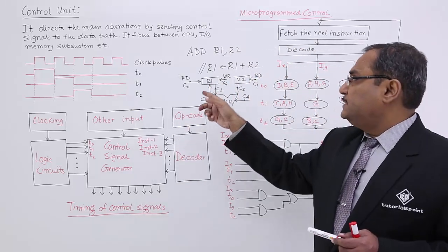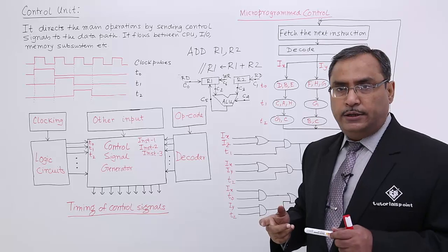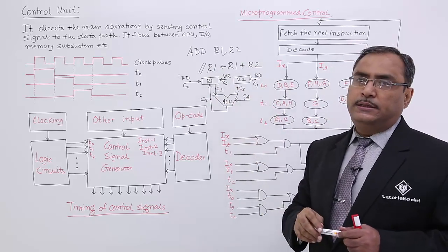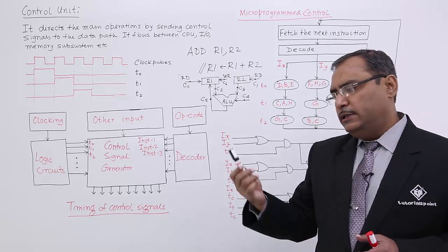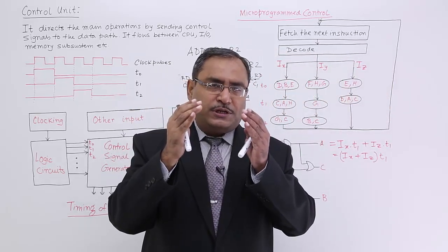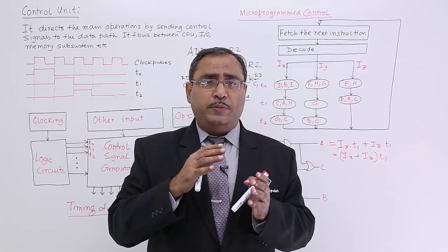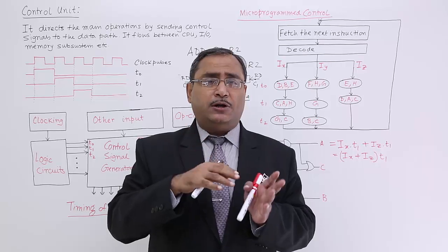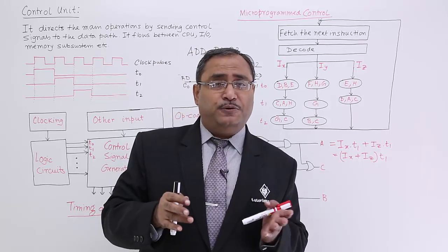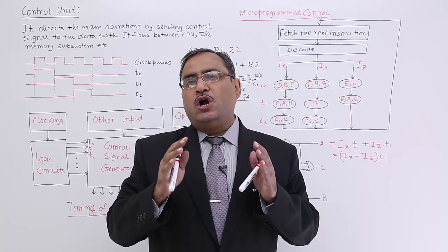In the meantime obviously the other control signals have got disabled. You see the sequence of control signals, how they should get generated so that this addition operation can take place. Everything will be decided by the control circuit. Just think, for each and every processor so many instructions are there, so many control signals are to be initiated, are to be enabled, are to be disabled. Think about the complexity of the control unit.